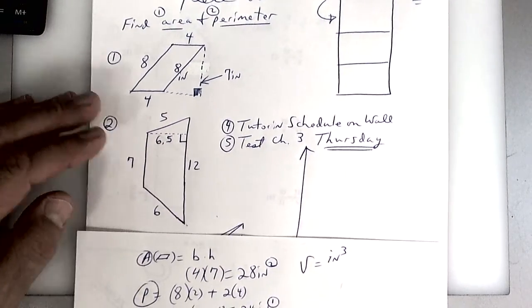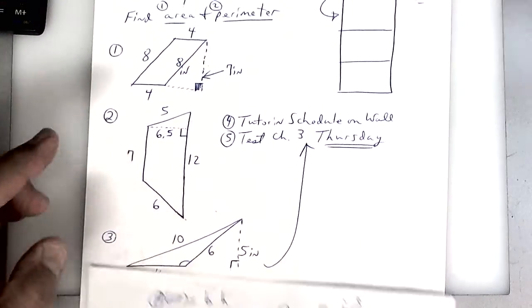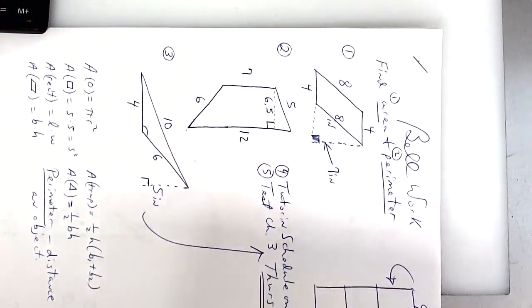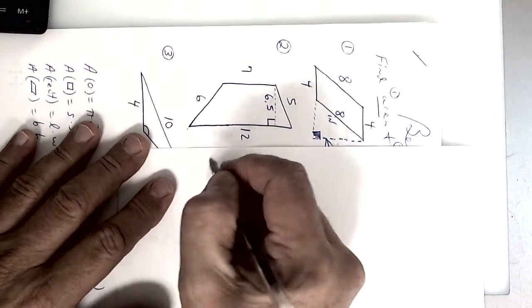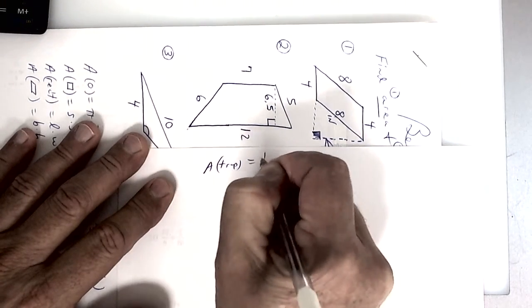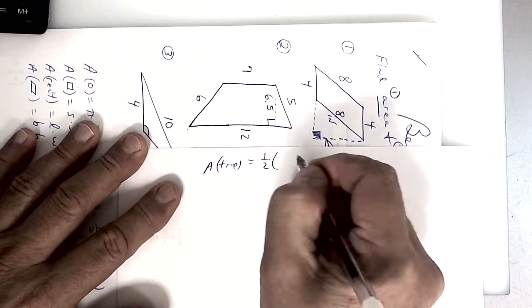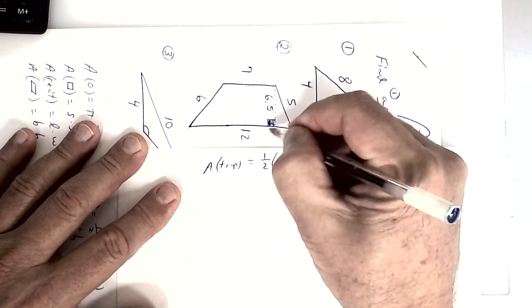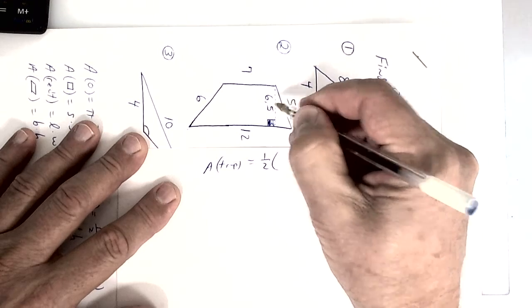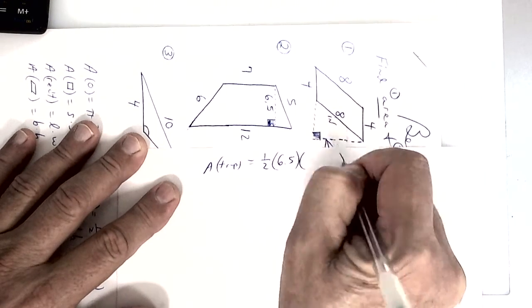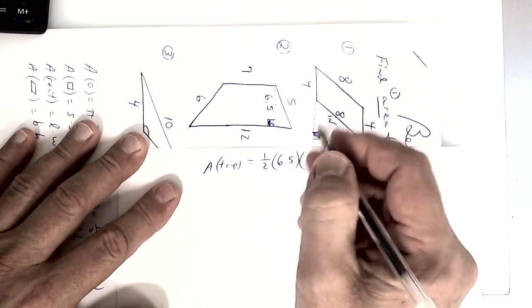The next one is a trapezoid. You see the parallel sides? I would turn it to where the parallel sides were on top and bottom. So the formula for area of a trapezoid is one half the height. We'll color this box in. This is actually your height right here from base to base, so put 6.5 and then add up your bases which are 7 and 12.